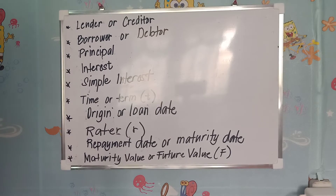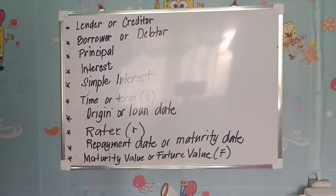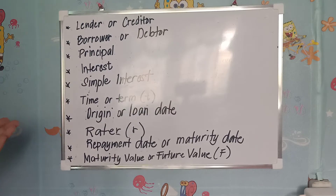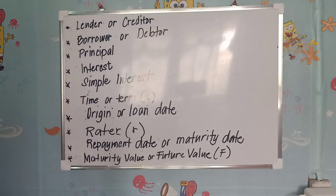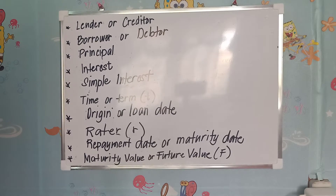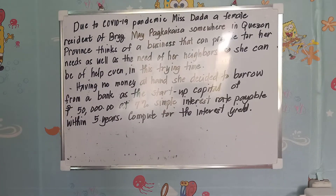Good day everyone. Today we are going to discuss simple and compound interests. To facilitate better understanding, we need to make ourselves familiar with different terms: the lender or creditor, the borrower or debtor, the principal, interest, simple interest, time or term, the origin or loan date, the rate, repayment date or maturity date, and the maturity value or future value. Please open your module to lesson one for the definitions.